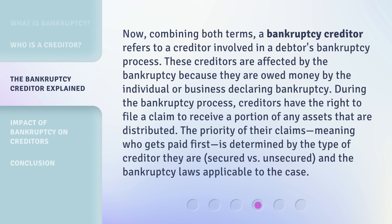Now, combining both terms, a bankruptcy creditor refers to a creditor involved in a debtor's bankruptcy process. These creditors are affected by the bankruptcy because they are owed money by the individual or business declaring bankruptcy. During the bankruptcy process, creditors have the right to file a claim to receive a portion of any assets that are distributed. The priority of their claims — meaning who gets paid first — is determined by the type of creditor they are, secured versus unsecured, and the bankruptcy laws applicable to the case.